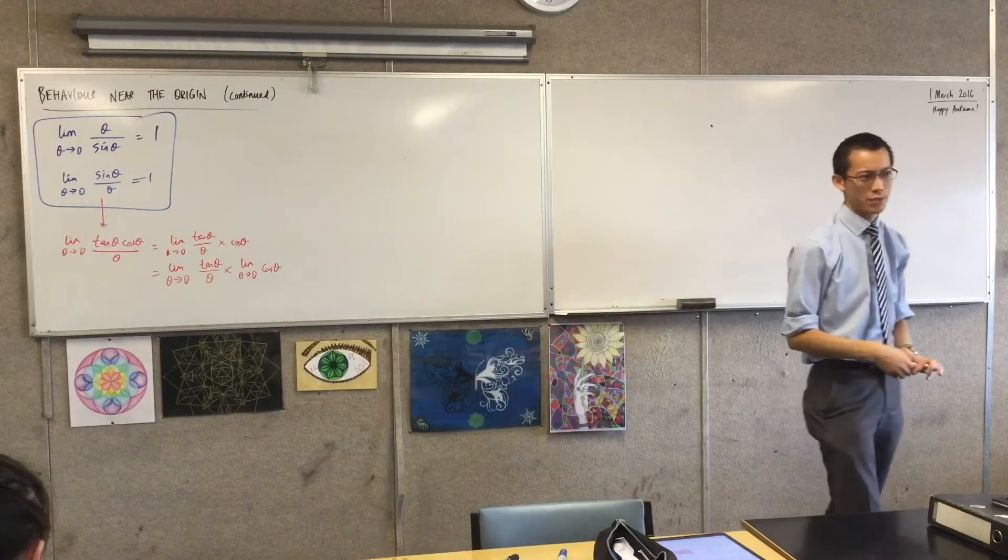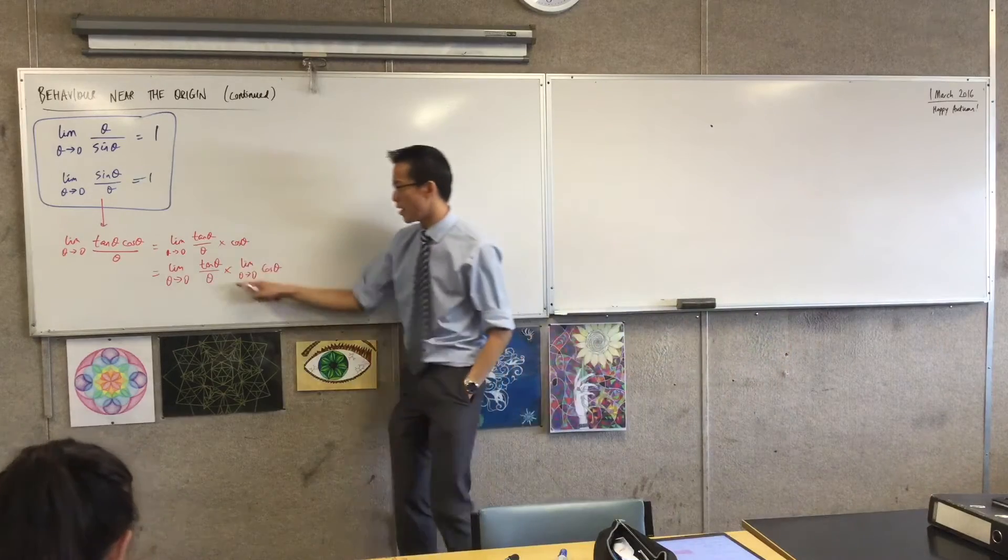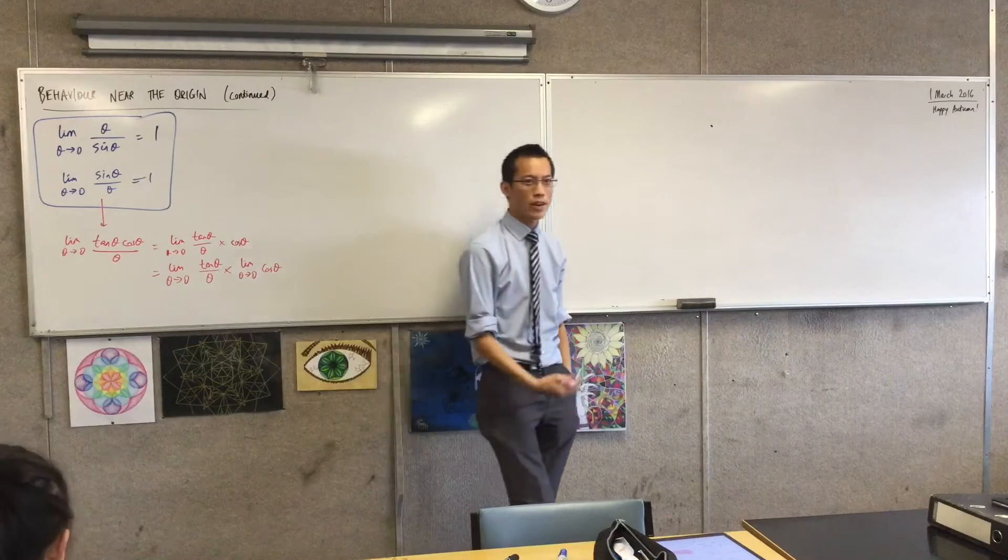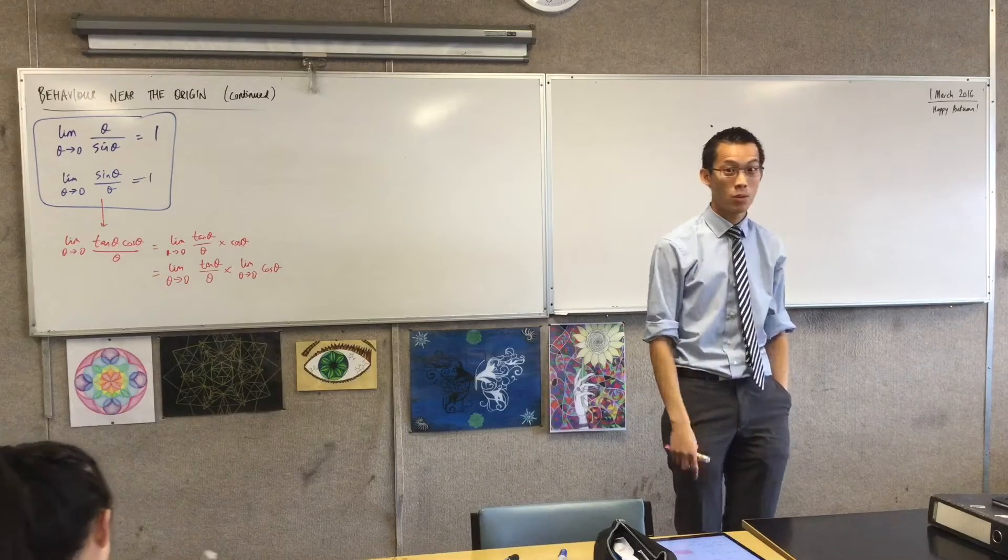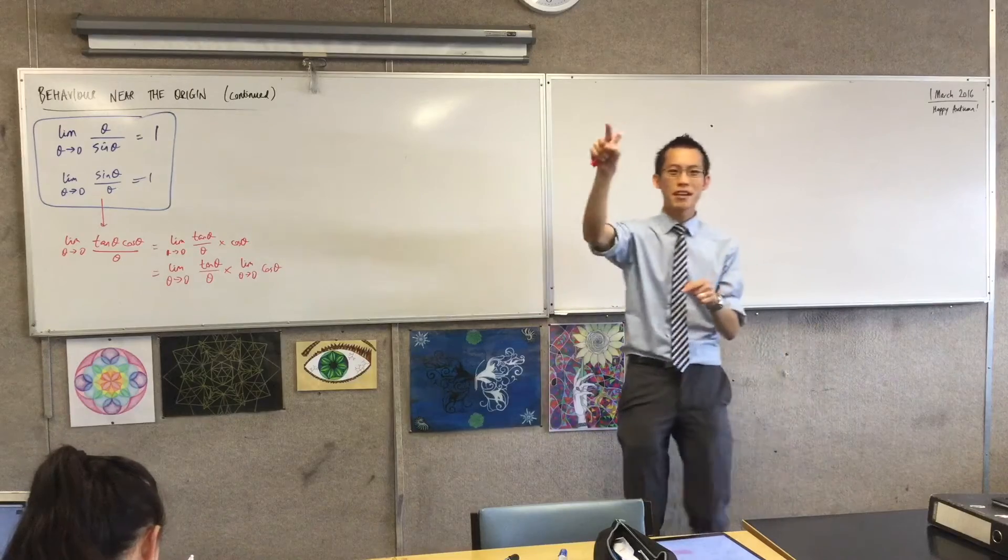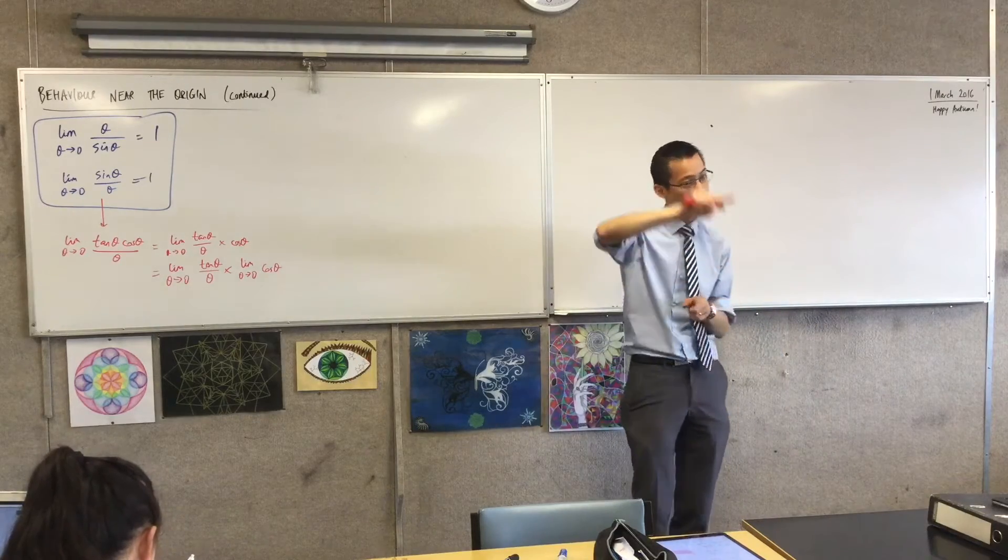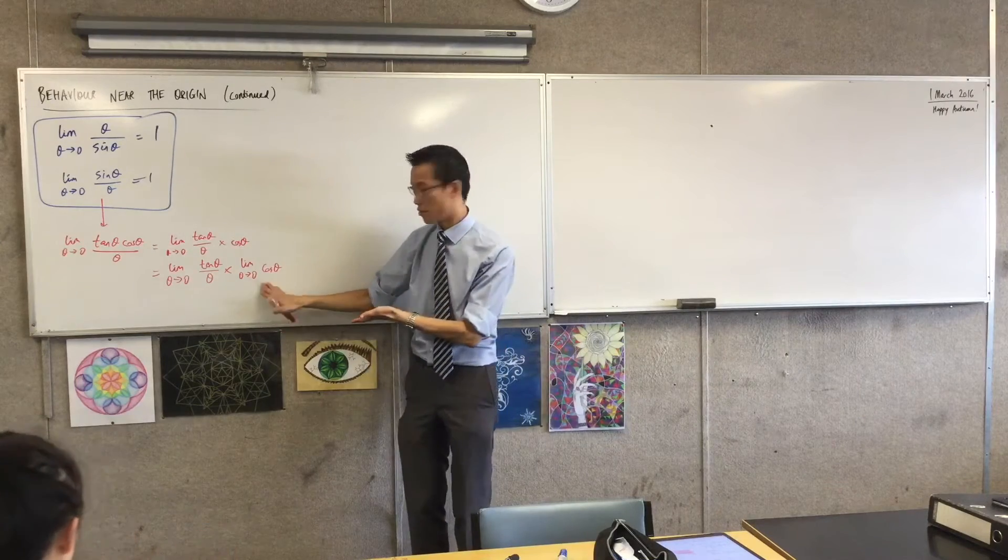But of course this right-handed bit here, this is really simple. What is happening to cosine as theta approaches 0? Where's it going? It's coming up to 1. Think of what the cosine graph looks like. There it is. It's an even function. So this guy is just going to be equal to 1.